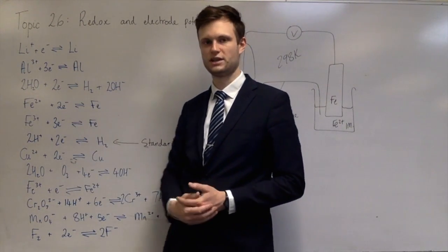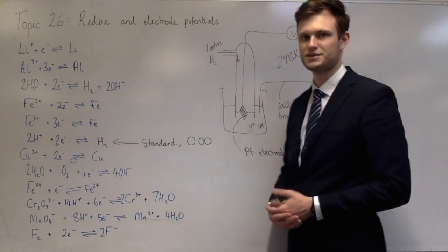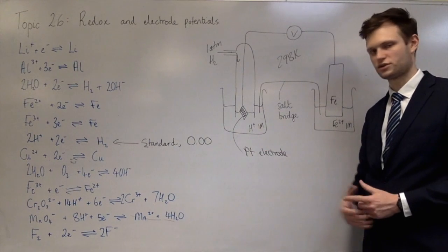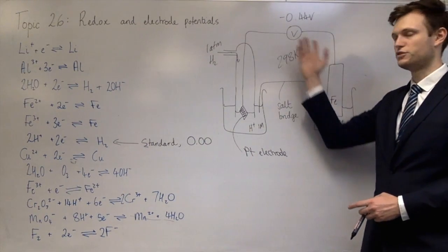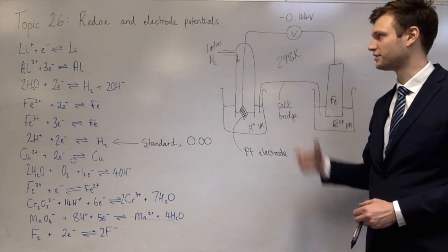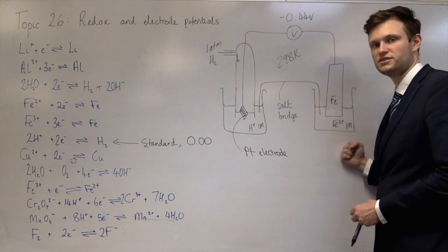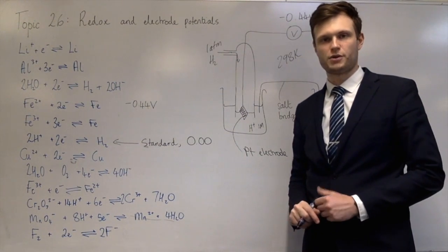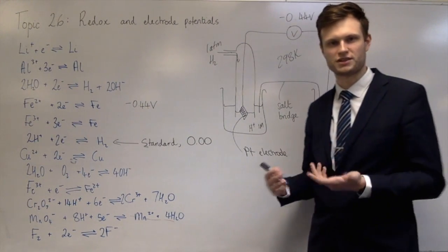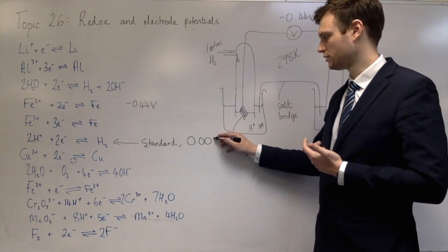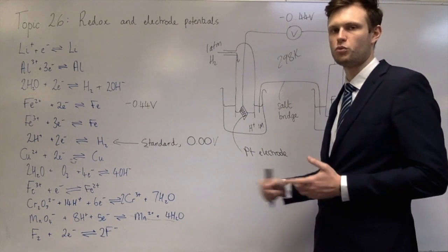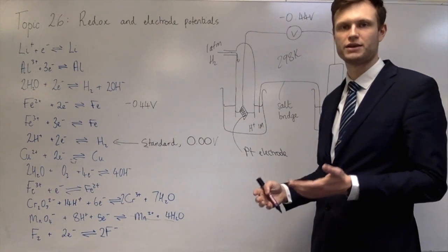The iron side is the negative side and the hydrogen side is the positive side. Under standard conditions you get −0.44 volts, showing that this is the negative electrode. When I wrote 0.00 for hydrogen, that means that if you set up two hydrogen electrodes, there's no electron transfer between them because they're both the same — so you get 0.00 volts.